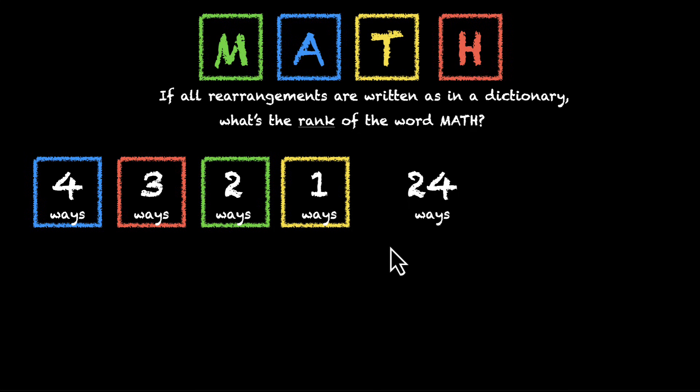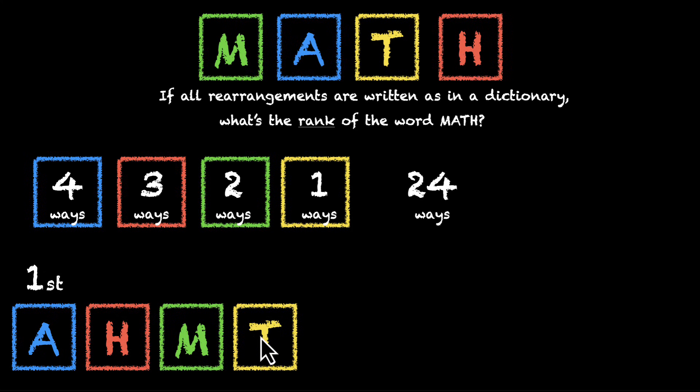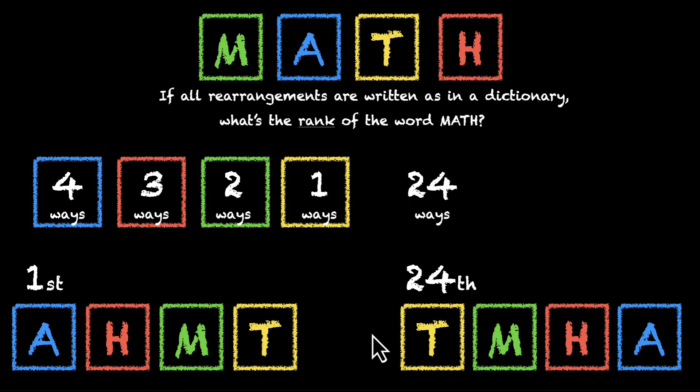Now, if you arrange those words in alphabetical order, what's the first word going to be? We have to start with the smallest one. We have A, then H, then M, then T. So AHMT, whatever this word is, is the first word in this dictionary. And the last word is the exact opposite, so the 24th word will be TMHA. So if the rank of AHMT is one and the rank of TMHA is 24, what's the rank of the word math?